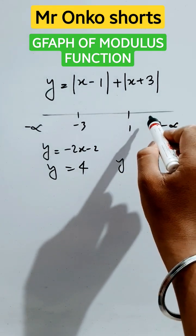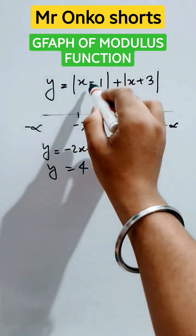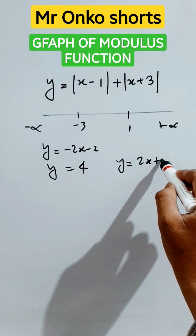And now, in this region, greater than 1, both will be positive. So it will be this plus this, it will be 2x plus 2.